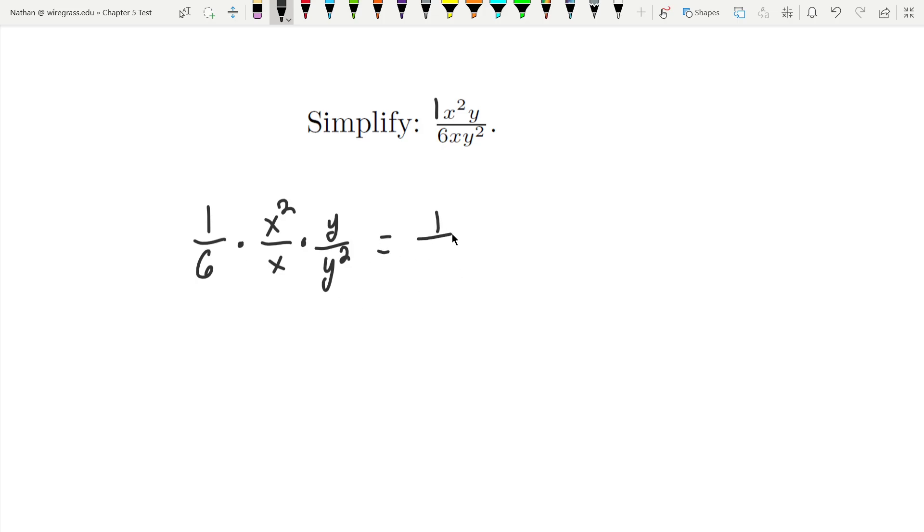Now one sixth can't reduce, that's the best we can get there, but here we have like bases that are divided. So x squared divided by x to the one is going to be x to the two minus one, so x to the one.